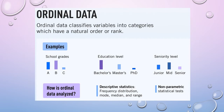Now let's discuss ordinal data. Ordinal data classifies variables into categories which have a natural order or rank. Examples include school grades A, B, C — all familiar from grading systems in Sri Lanka for GCE O/L and A/L. We know A represents somewhat higher marks than B, and so on.